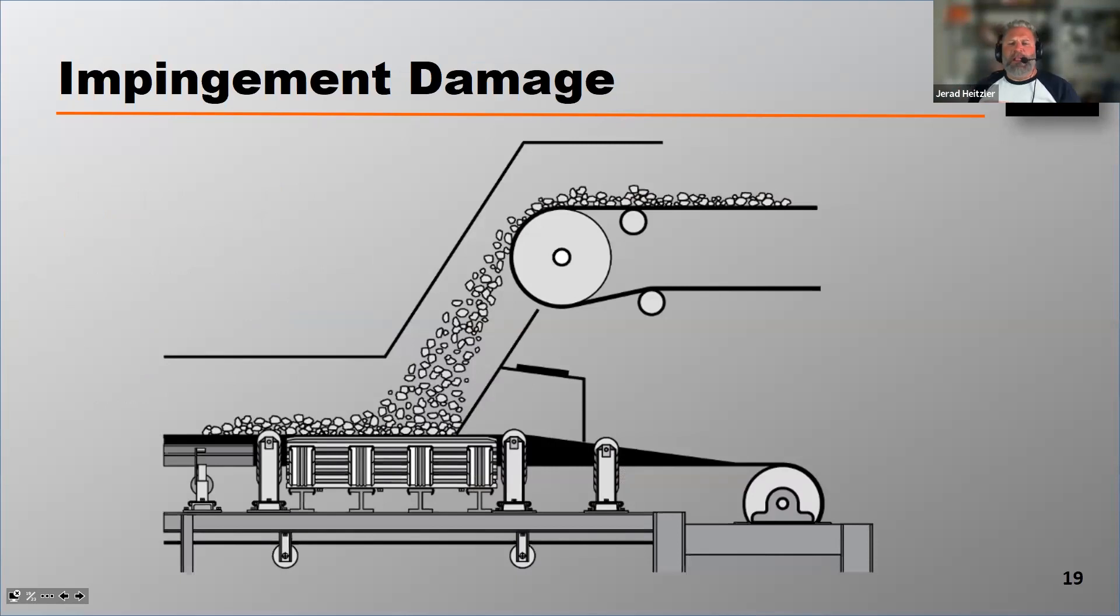Impingement damage typically happens from abrasive material rotating on the surface of the belt. As belt A delivers its cargo to belt B, as that cargo is in free fall through that load zone or through that chute work, that cargo as it lands on the receiving belt of belt B, it rotates, it slides, it moves as it settles onto the receiving belt.